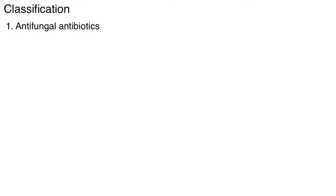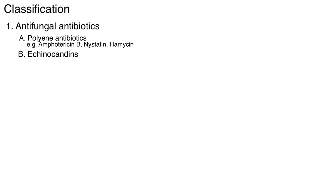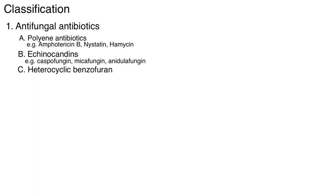Let's start with classifications. The first class is antifungal antibiotics, subcategorized into three groups: A) Polyene antibiotics — examples are amphotericin B, nystatin, and hamycin; B) Echinocandins — examples are caspofungin, micafungin, and anidulafungin; C) Heterocyclic benzofuran — example is griseofulvin.